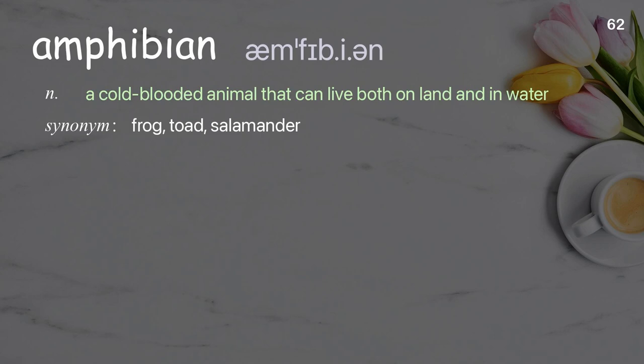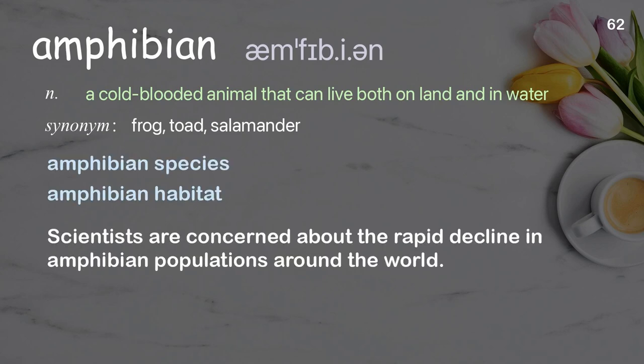Amphibian: a type of cold-blooded vertebrate animal. Examples: amphibian species; amphibian habitat. Scientists are concerned about the rapid decline in amphibian populations around the world.